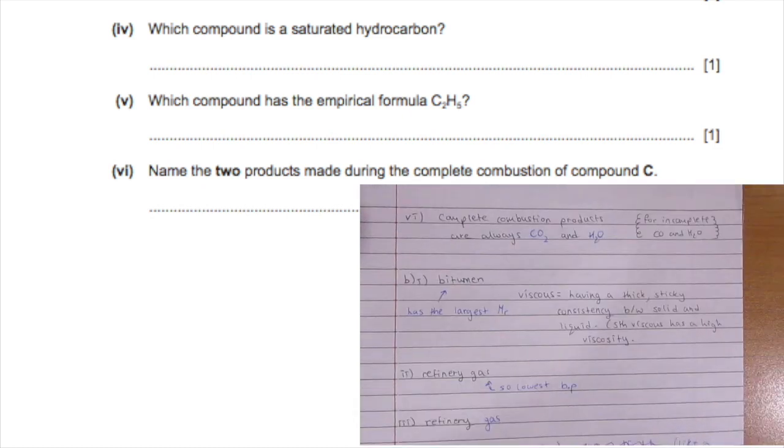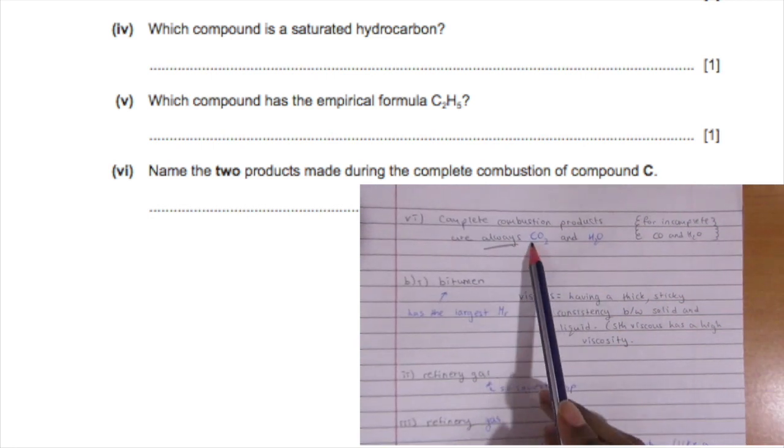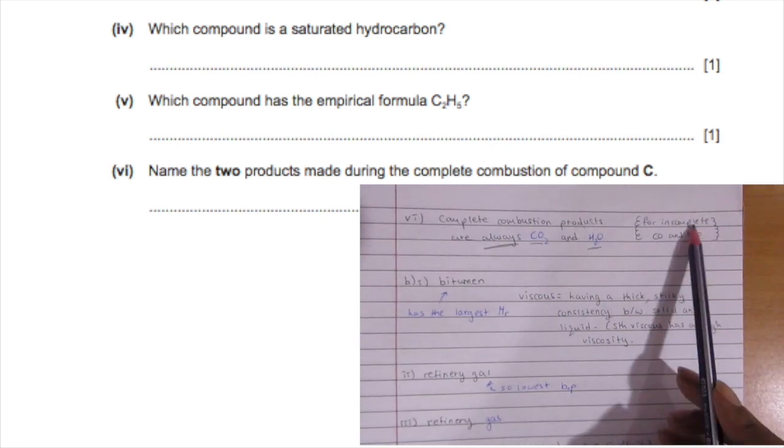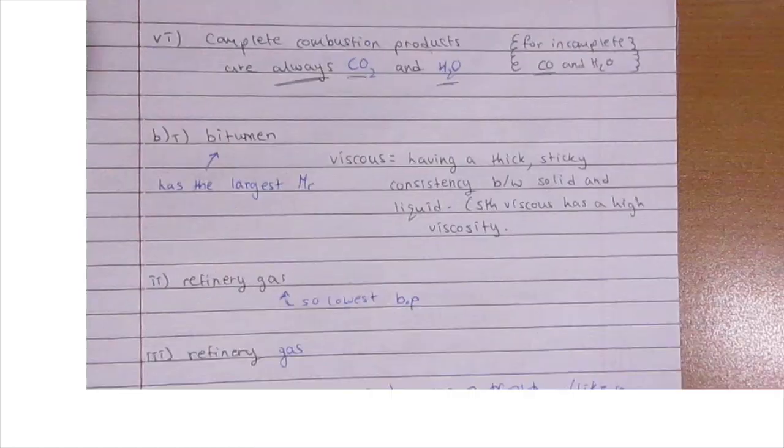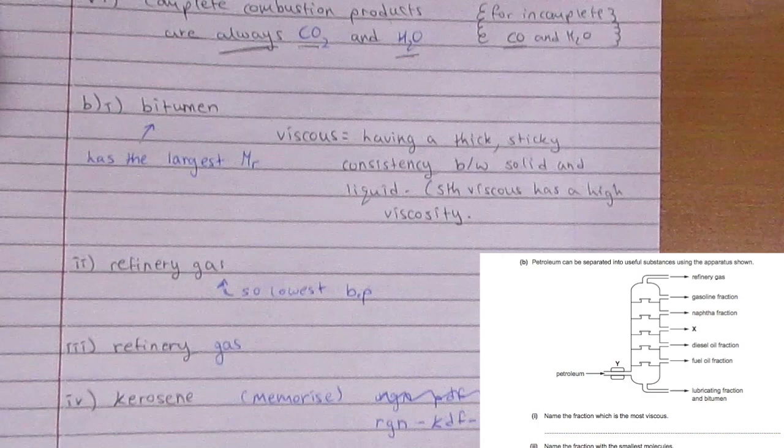Name the two products made during complete combustion of compound C: C3H6Br2. In complete combustion, the products are always carbon dioxide and water. If it's incomplete, then it's carbon monoxide and water.